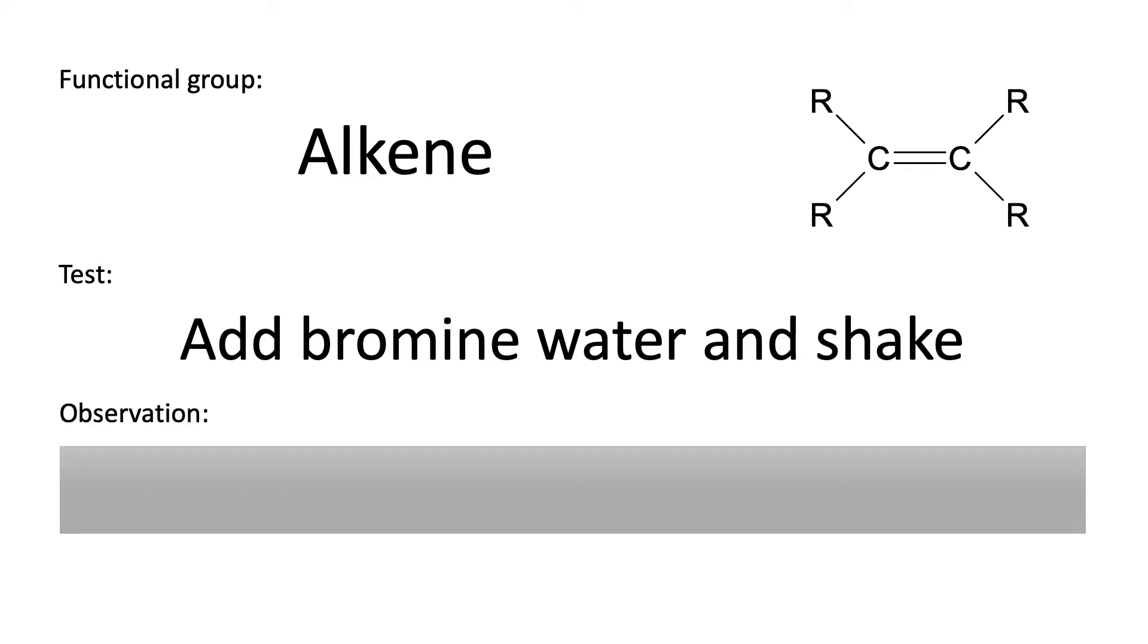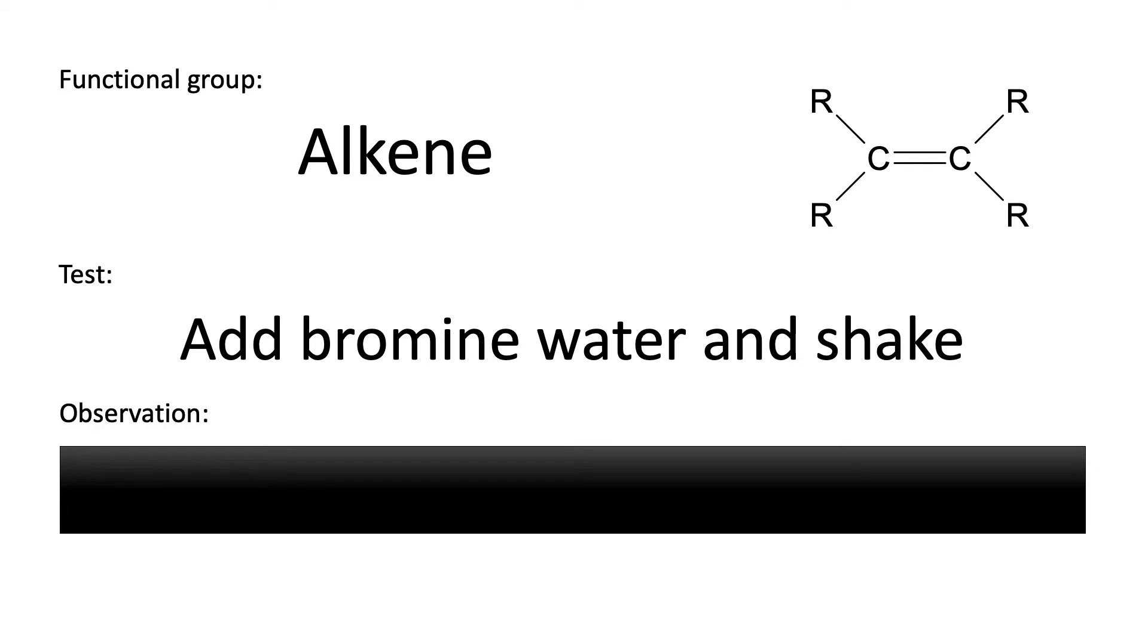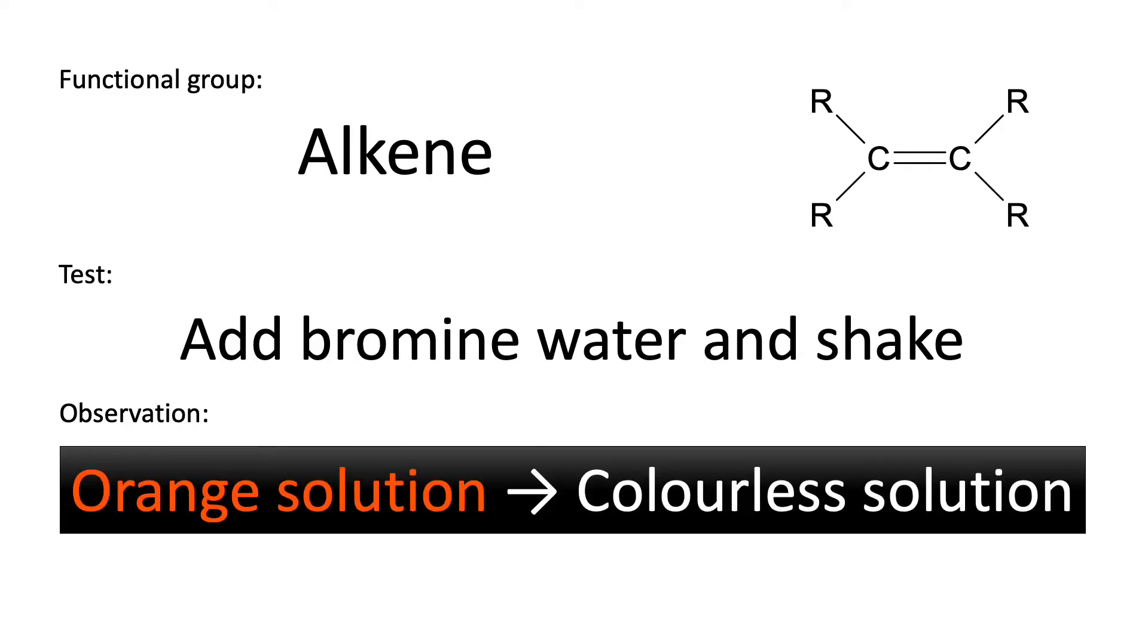You are often asked in exam questions about the observation that you would make for a positive result. So observation remember has to be what we see and in this case our orange bromine water solution turns into a colourless solution. It is very important we do not say it goes clear. That is not the same as saying it loses its colour or turns colourless or decolourises, all of which are acceptable, but just to repeat clear is not acceptable as an answer here.